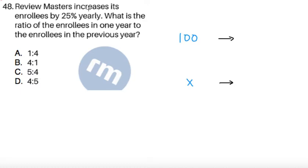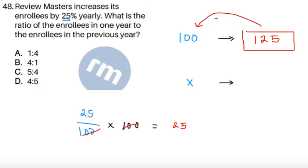For item 48, review masters increases its enrollees by 25% yearly. What is the ratio of enrollees in one year to the enrollees in the previous year? So we are not given the number of enrollees in one year nor the previous year. So we can try to let a value without loss of generality. Let's start with a random value, let's say 100. So to make our calculations more simple, let's say this is from one year. And then to get the next year, I would increase it by 25%. Now 25% or 25 over 100 of 100 students, that's going to give us an additional 25 students. So if there are 100 students in one year, the next year, it would have 125. So if you want to get the ratio of one year, so the year that there were 125 students to the previous year, which is going to have 100 students, the ratio that we will get is 125 is to 100.